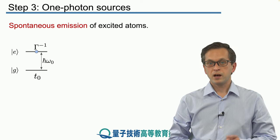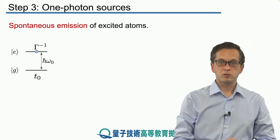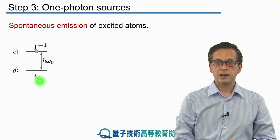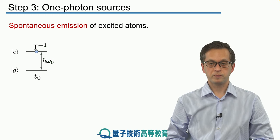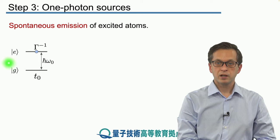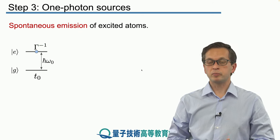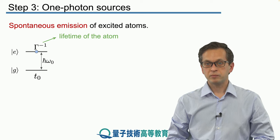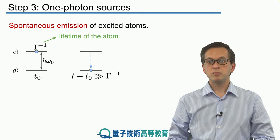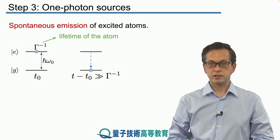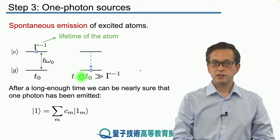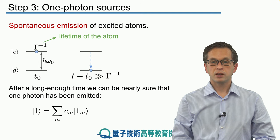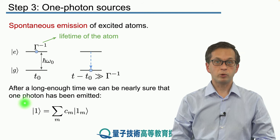Imagine a two-level atom undergoing the process of spontaneous emission. At time zero, we excite our atom from the ground state to its excited state. The energy difference between these two states is given by h-bar omega-naught, and the upper level has a lifetime given by gamma to the power of minus one. After some time much larger than the lifetime of the excited level, the atom will jump back to its ground state, emitting a photon. This photon can be described by the following wave packet superposition.